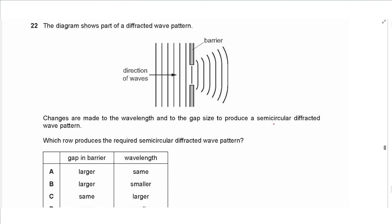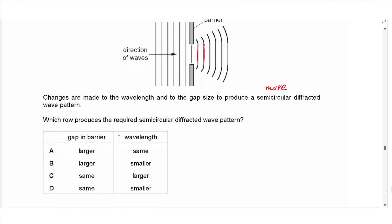Question 22 says: the diagram shows part of a diffracted wave pattern. Changes are made to produce a semicircular diffraction pattern, meaning more diffraction is needed. We need the gap to be as close as possible to the wavelength — the gap is too wide, so we need it narrower, but since that is not an option we keep the gap the same and increase the wavelength to match the gap size. So the answer is C.